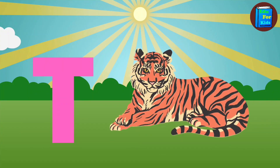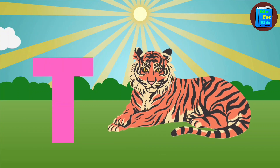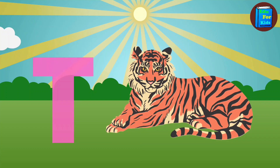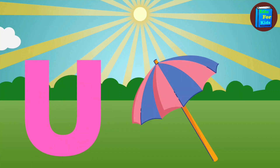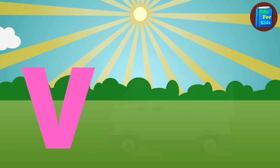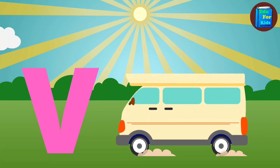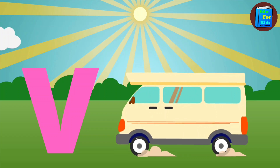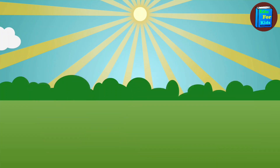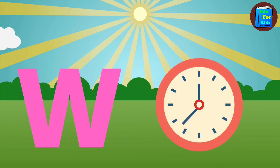T for tiger. U for umbrella. V for van. W for watch.